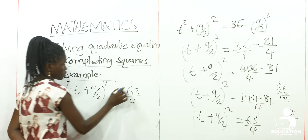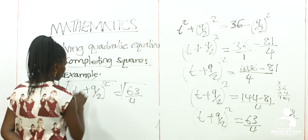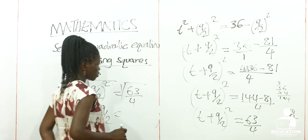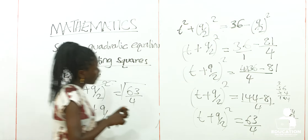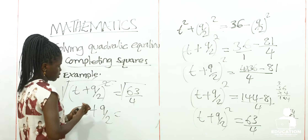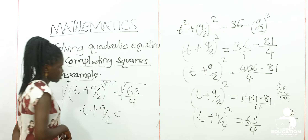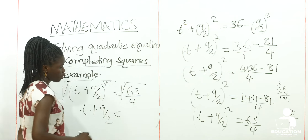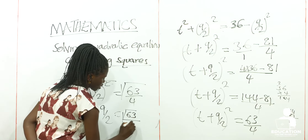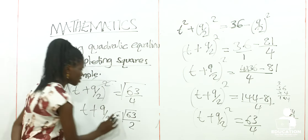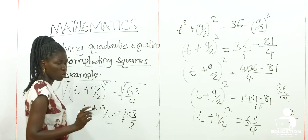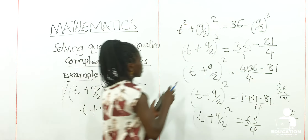We shall have it like this, we shall also have it there. So this will go with that, we shall be left with t + 9/2 equal to the root of 63 over root of 4, which is root of 63 over 2. To get our final answer, this is plus or minus, because we need to get two values. So we are now going to get the final values of T.